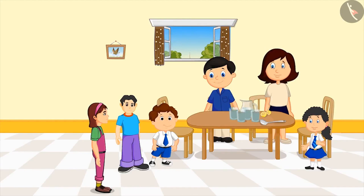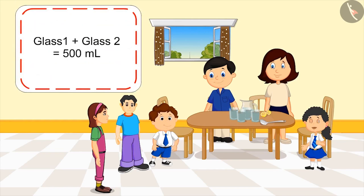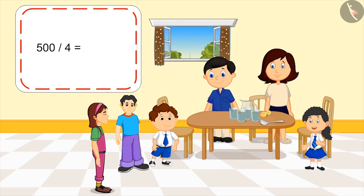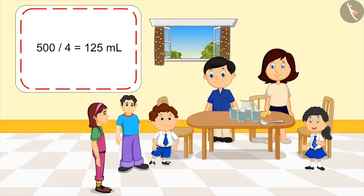Meanwhile, two friends of Pinky arrive. We should give lemonade to our friends too. Why don't we share part of our lemonade with them? In total we have two glasses of lemonade, so how much lemonade will we all get? As Mom explained, we have 500 ml of lemonade — half a liter. Let's divide 500 by 4. Kids, you can pause the video and think. We will all have 125 ml of lemonade. Wow, Pinky, you solved that too quickly!